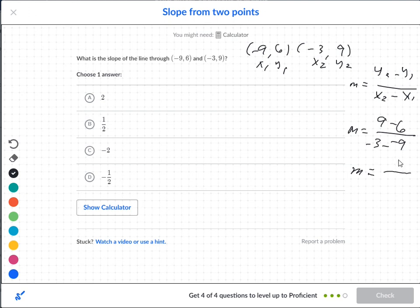So, 9 minus 6 is 3. On the bottom, you're going to say negative 3 plus 9. So, now, I just want to bring those together. So, negative 3 plus 9 is 6.